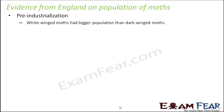Before industrialization came in, the population of moths was different, but post-industrialization it became just the opposite. This change has also acted as evidence for evolution. Pre-industrialization, in a particular area in England, it was found that the white-winged moths had a bigger population than the dark-winged moths.